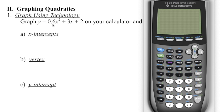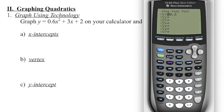In order to graph this function, we're going to enter the function in y equals on the top left-hand corner. So we're going to go into y equals and then enter 0.6, then the variable key squared, plus 3x, and then plus 2.